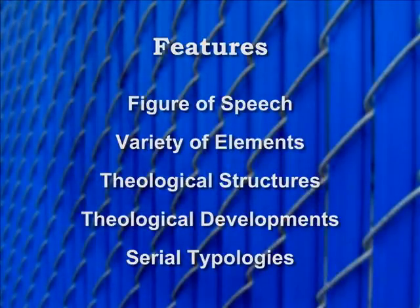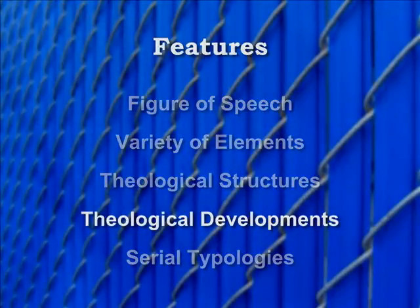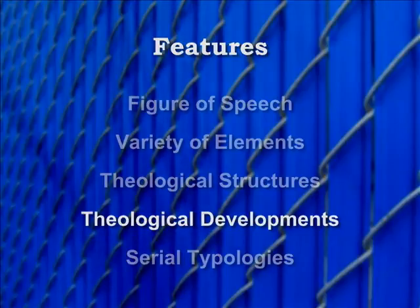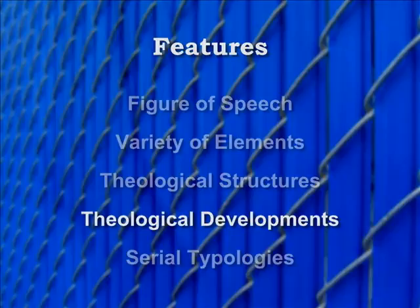A fourth characteristic of typologies in Scripture is that they always reflect diachronic developments. When the scriptures identify types and antitypes, they always belong to different times in history and so they reflect diachronic theological developments between those times. For this reason, as with all figures of comparison, typologies will involve both similarities and differences between their elements. On the one side, we're able to see similarities — certain persons, institutions, and events are types of later persons, institutions, and events because their theological significances were similar. But on the other side, these comparable elements were also dissimilar. They were never precisely the same. With the passage of time, new revelations took place between types and antitypes that caused developments in their theological significances.